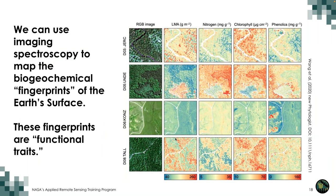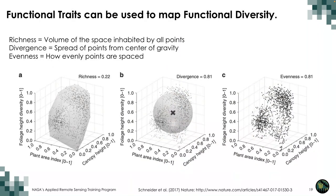With this detailed spectral signature we can map the biogeochemical fingerprints of the Earth's surface, as pioneered by scientists like Phil Townsend. These fingerprints represent functional traits including leaf mass area (LMA), nitrogen, chlorophyll, phenolics, potassium, phosphorus, and carbon. If we measure multiple functional traits — such as foliage height, plant area, and canopy height — across pixels and map them in a three-dimensional trait space, we can quantify functional diversity.